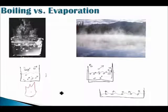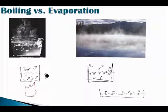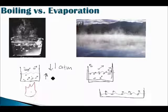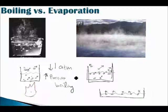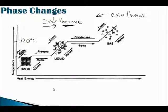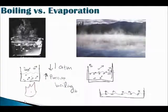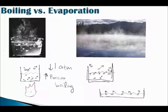So to summarize: evaporation involves mostly surface molecules, while boiling can happen throughout the whole liquid. More formally, boiling occurs when the pressure of the molecules inside the liquid equals atmospheric pressure — atmospheric pressure pushes down, the internal pressure from heating increases, and the two become equal. Next, we'll look more closely at phase transitions and specific latent heat.